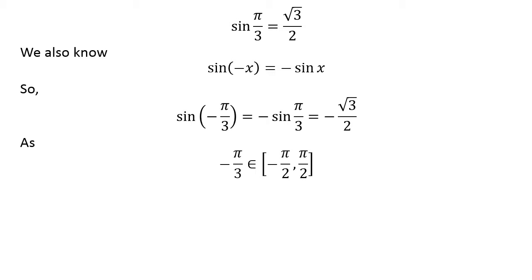As minus pi upon 3 lies in the closed interval of minus half of pi and half of pi, minus pi upon 3 is the principal value of inverse sine of minus square root of 3 upon 2.